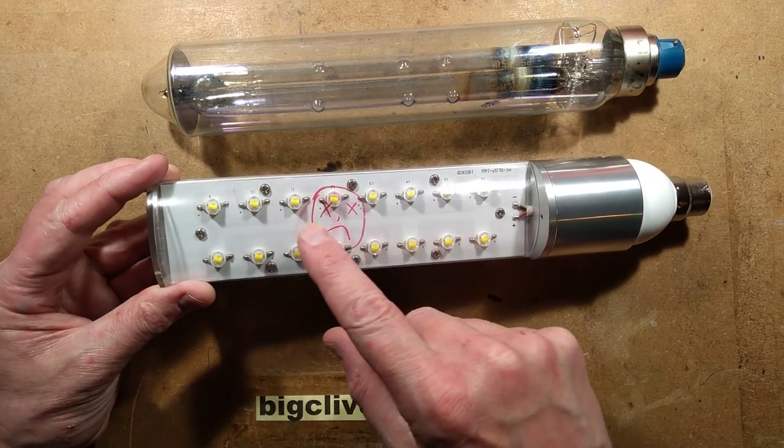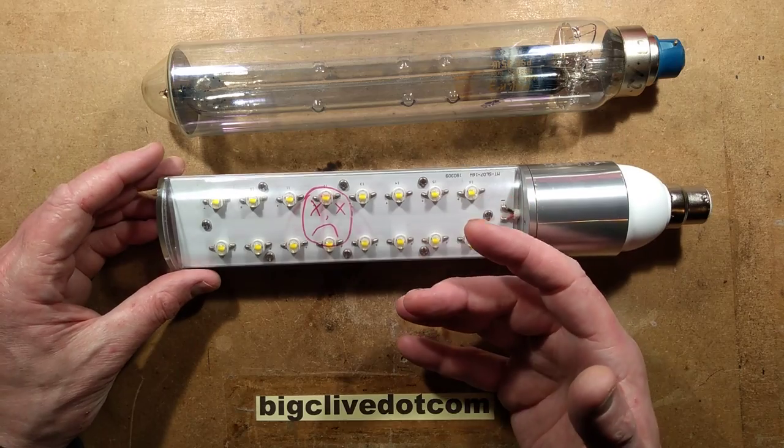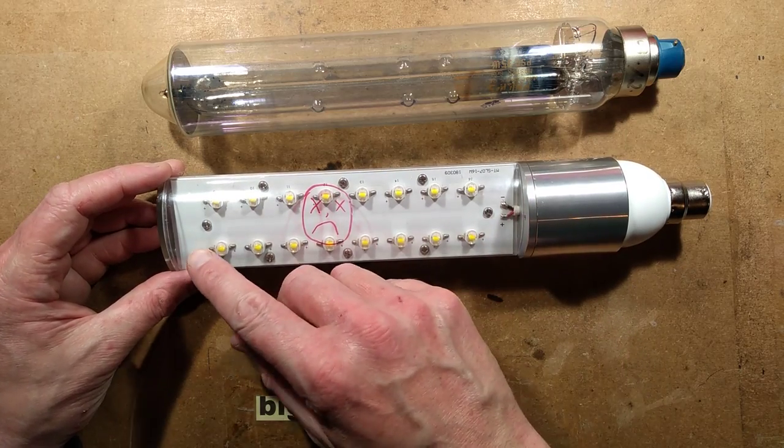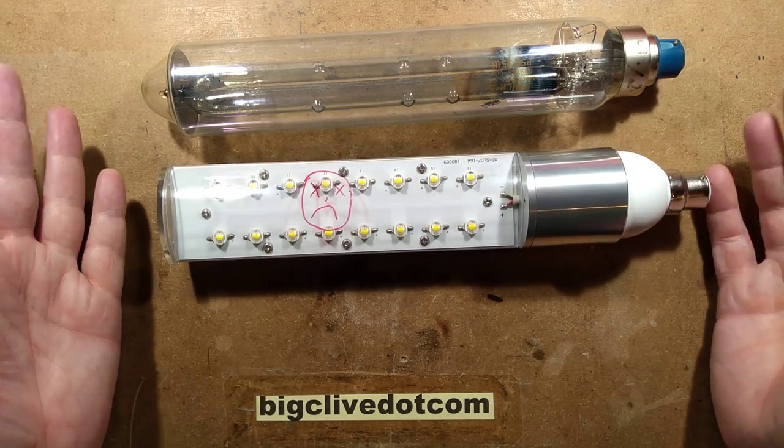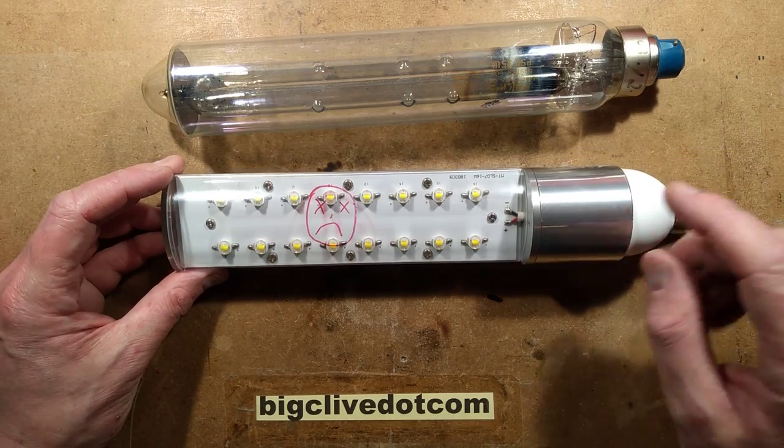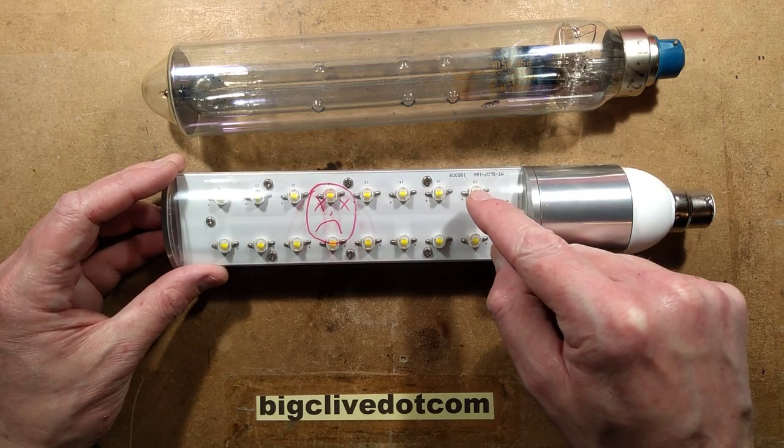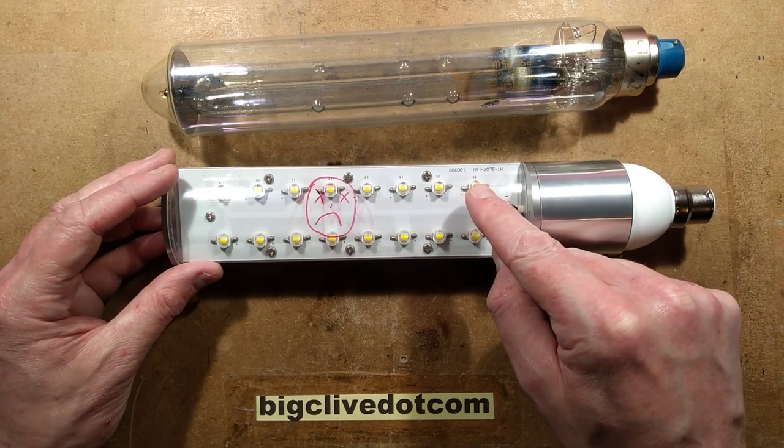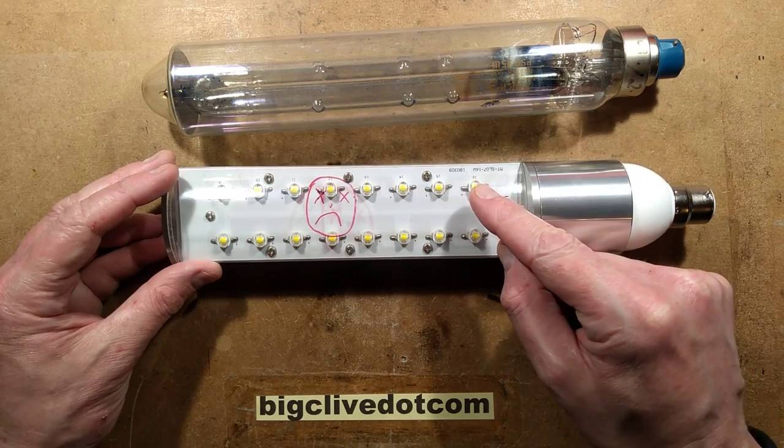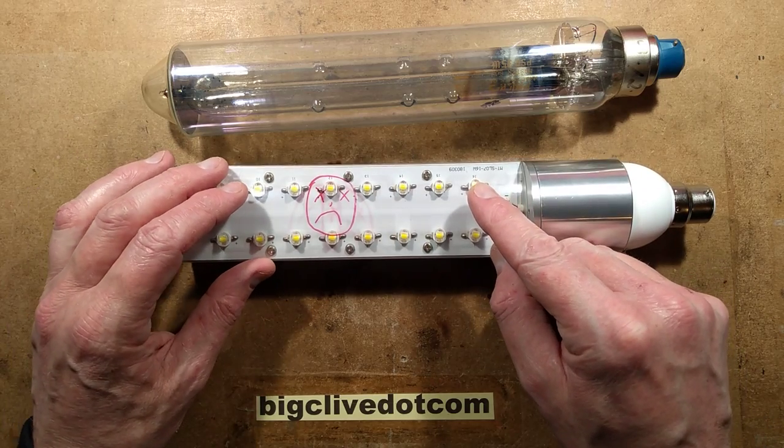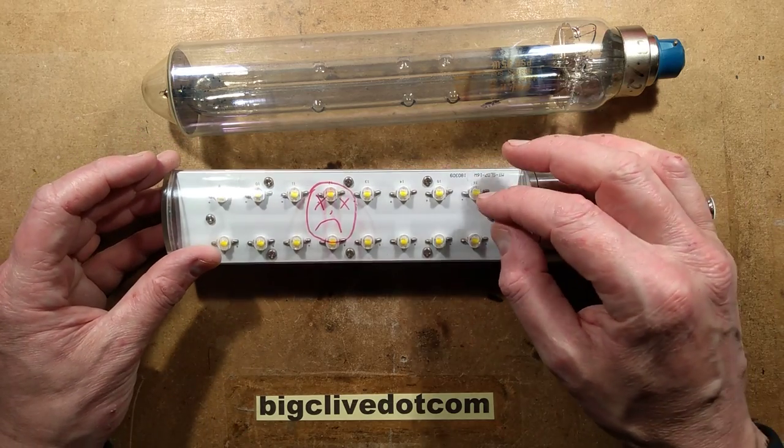If you take a look at this, it's got the 1 watt LEDs in it. The earliest streetlights all tended to use a matrix of 1 watt LEDs, and they were pretty reliable. What's really interesting about this, it's the first time I've ever seen it. Normally, they have a round lens on top.